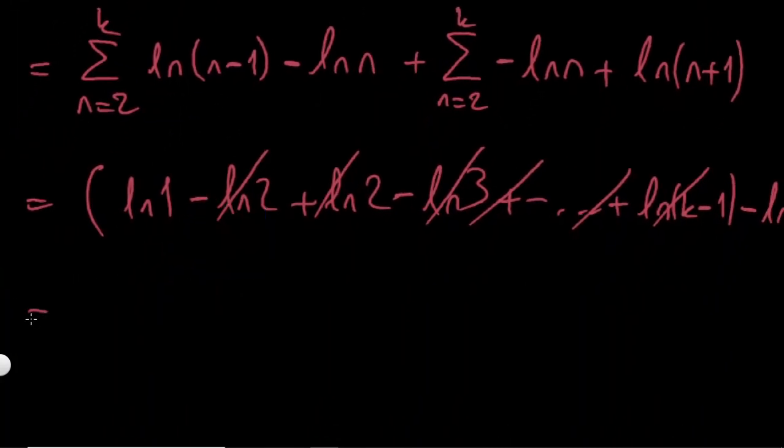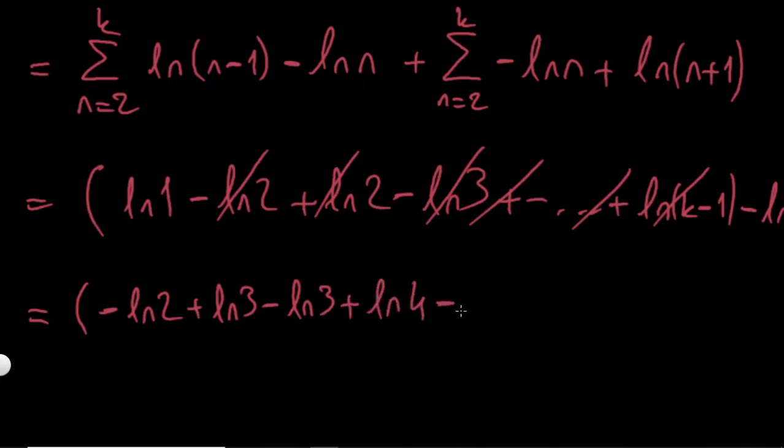And second sum is gonna be, I'm putting n is equal to 2, minus ln 2 plus ln 3. And if I put n is equal to 3, minus ln 3 plus ln 4, minus ln 4. And it's again going like this, ln 5.